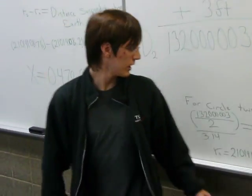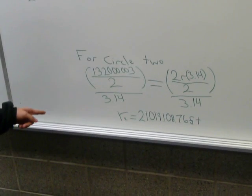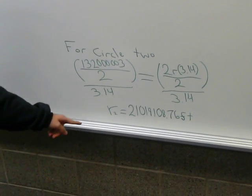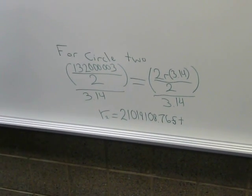For circle 2, I did the same, and the radius came out almost the same, except the decimal was 0.76 feet.